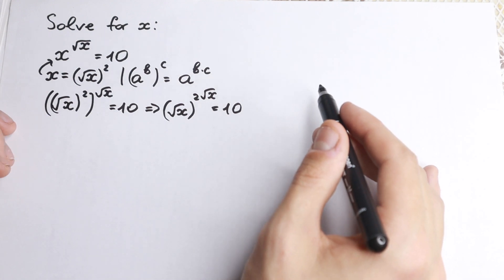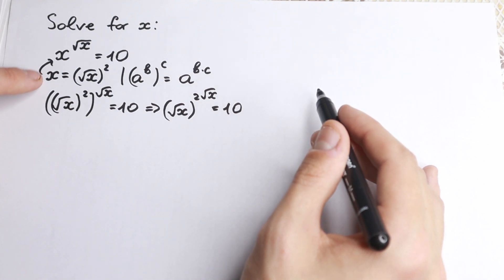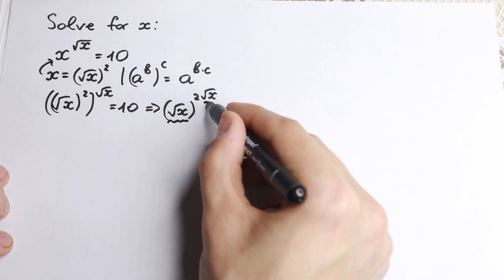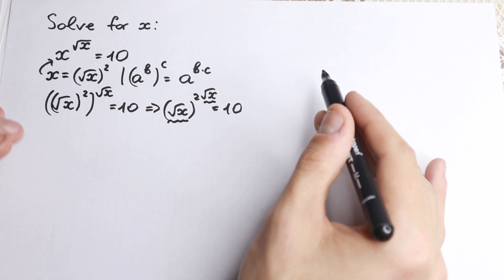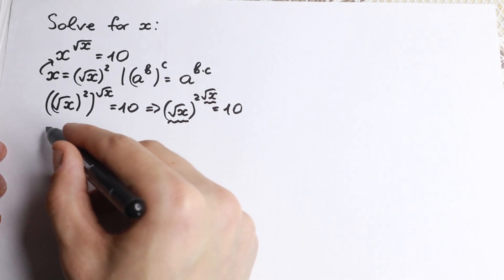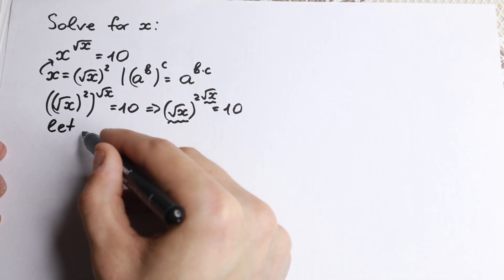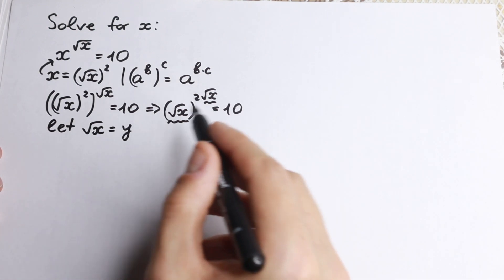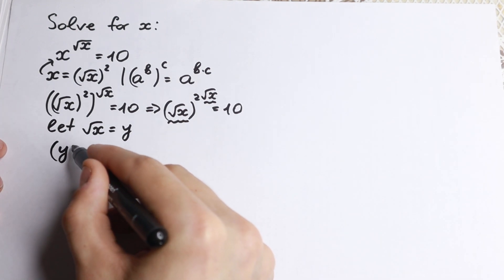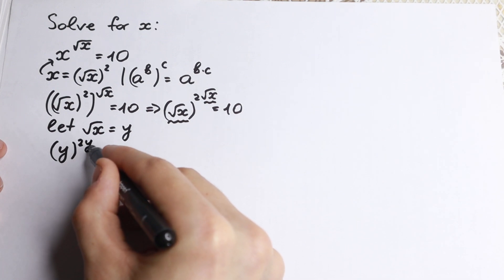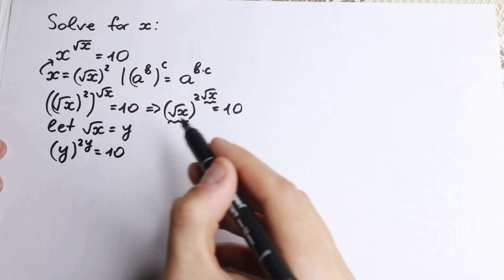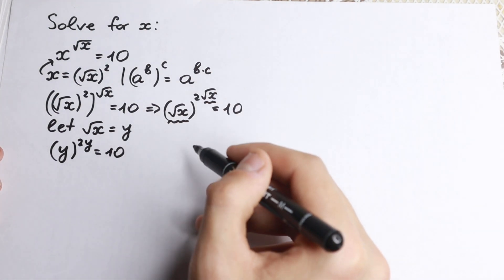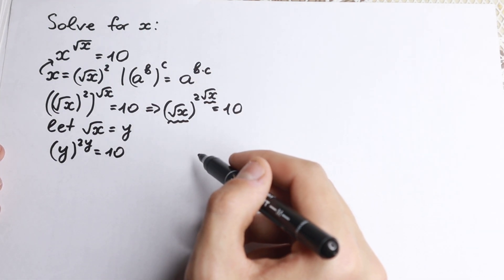The reason I made this substitution is that now we have square root of x appearing twice. So it's really great — we let our square root of x equal to y. As a result, we get y to the power 2y equal to 10. This is a little bit easier than the original equation, so let's go and solve this with y.